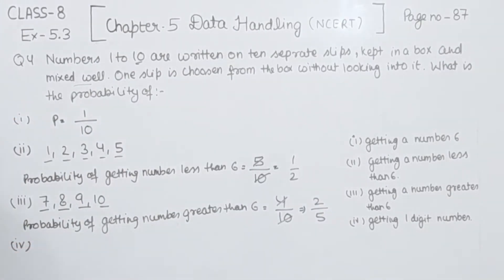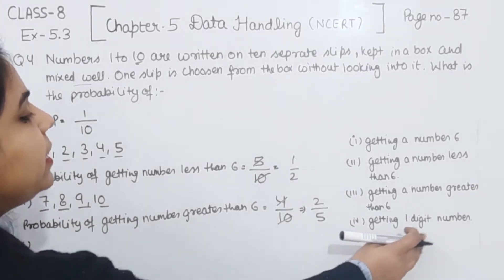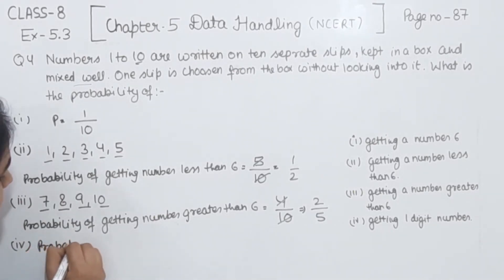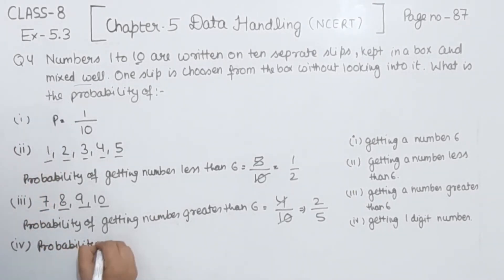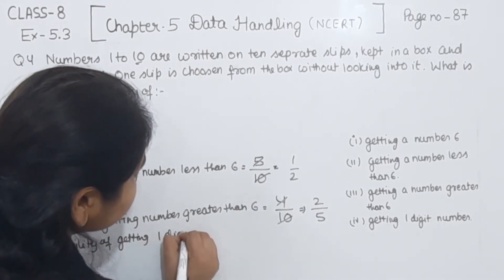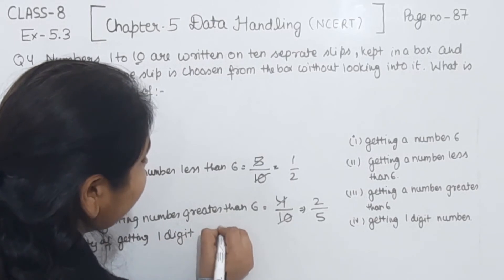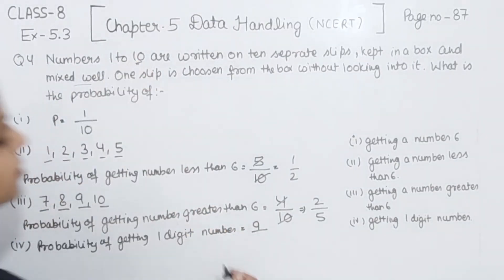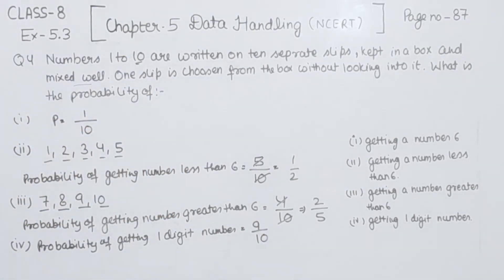Now comes to part 4. In this one, we have to find the probability of getting a 1-digit number. So the 1-digit numbers we are having are numbers 1 to 9 — 10 is not included. So the probability of getting a 1-digit number: we have 9 favourable outcomes and the total outcomes we have 10. So the probability will be 9 by 10.